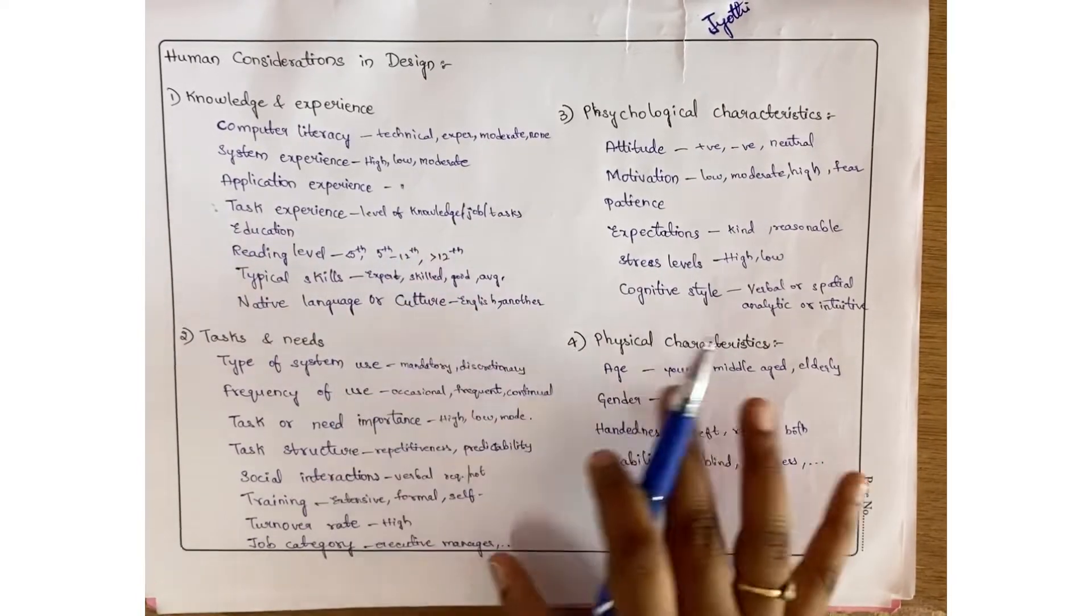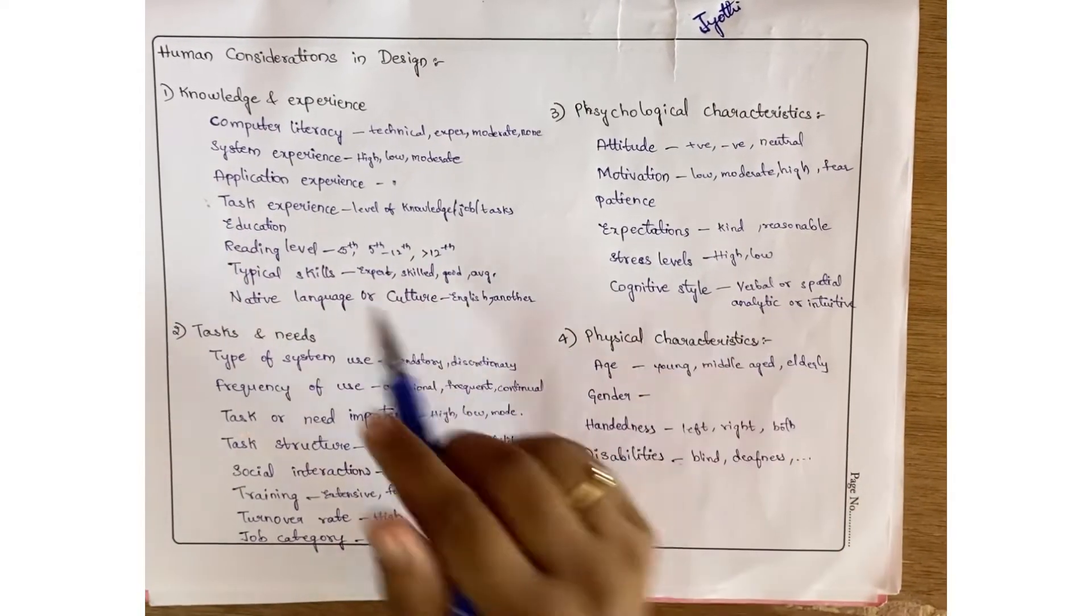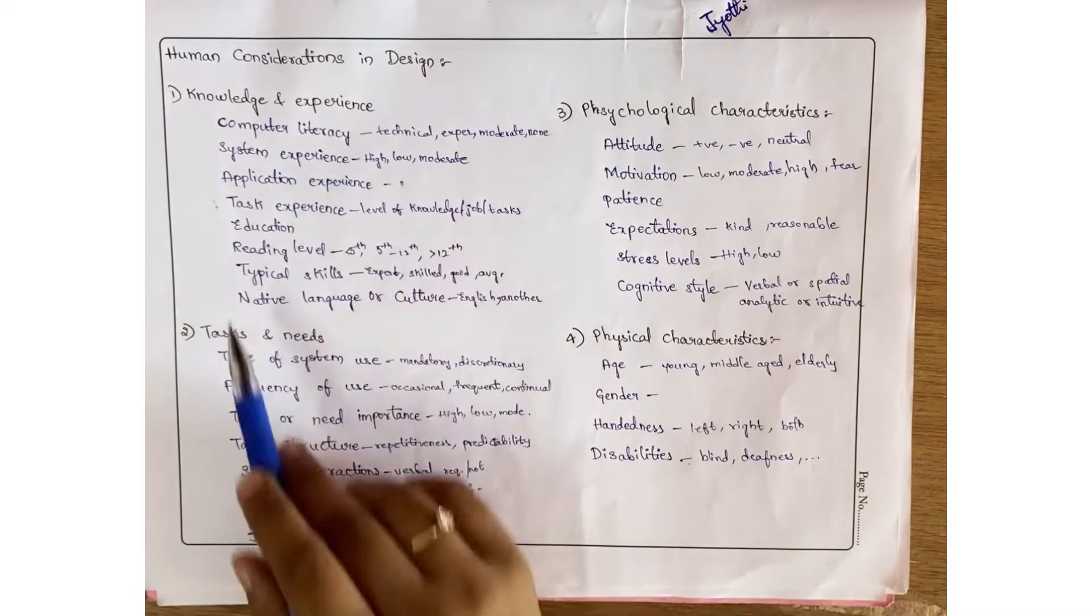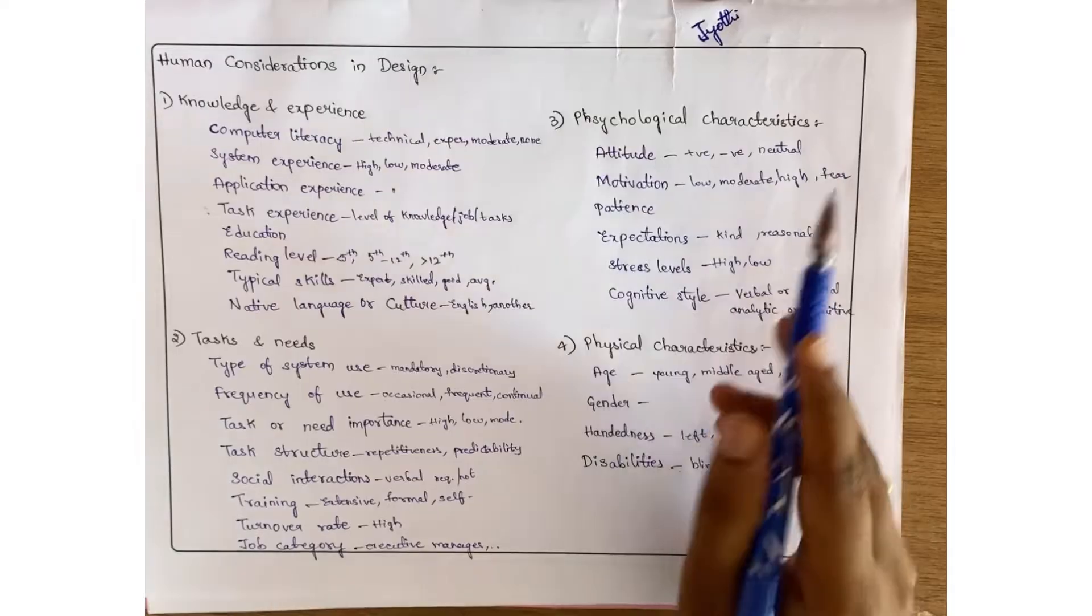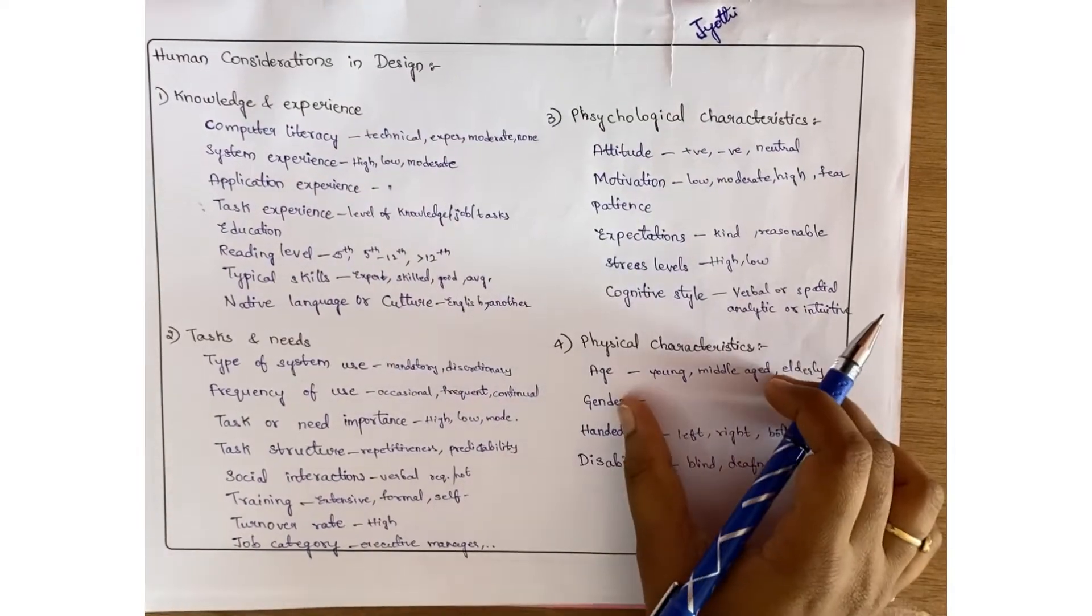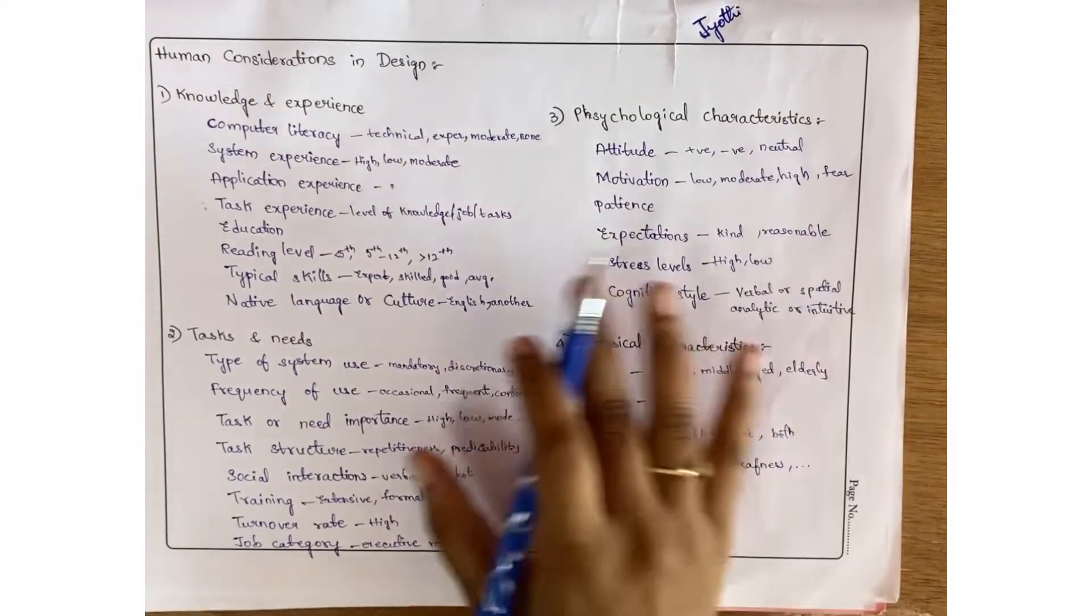Human considerations in design - they have considered four things here: the user's knowledge and experience, the user's tasks and needs, the user's psychological characteristics, and physical characteristics. This is a very simple and easy topic in the second unit.